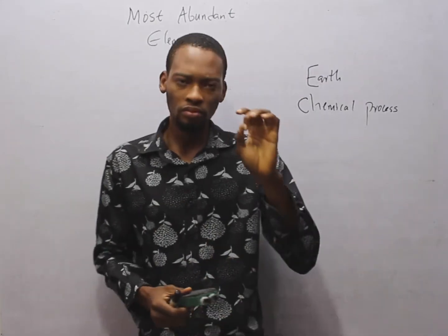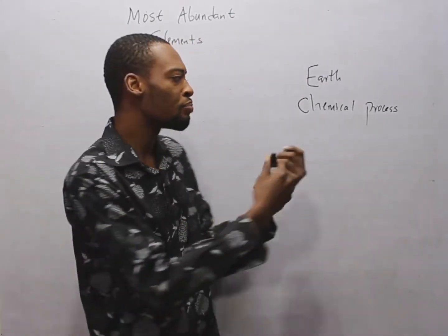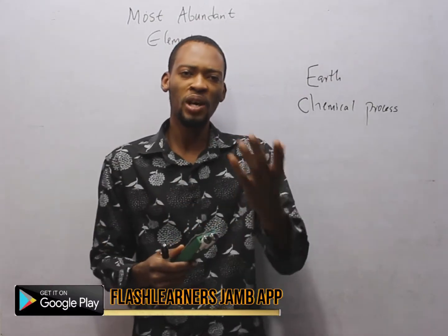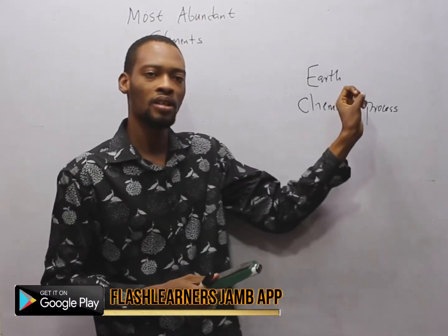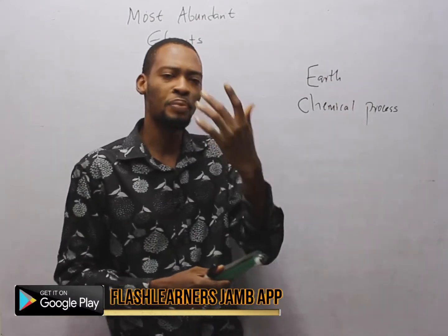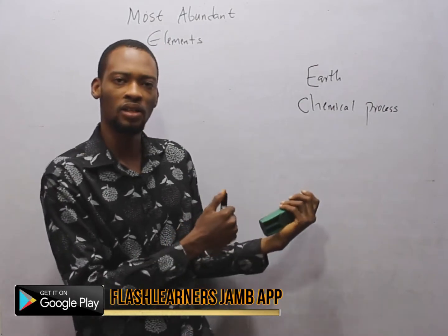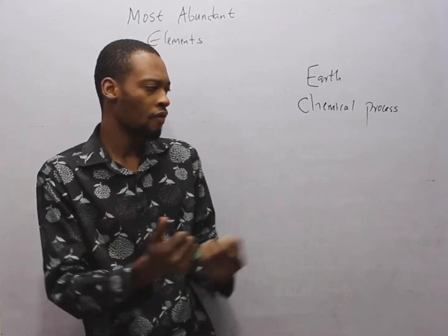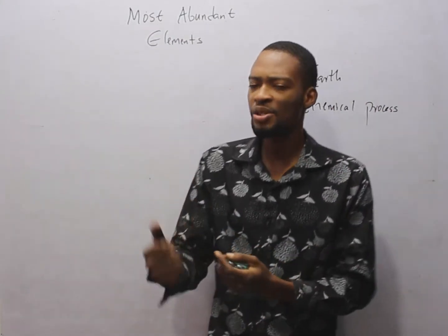Now, a substance can either be pure or impure. A pure substance is regarded as elements, while an impure substance can be a compound or mixture. The first 20 elements are hydrogen,